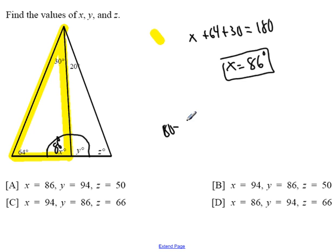So I can just say 180 minus 86, and that should give me Y. What's 180 minus 86? That's 94, so this is 94 degrees.